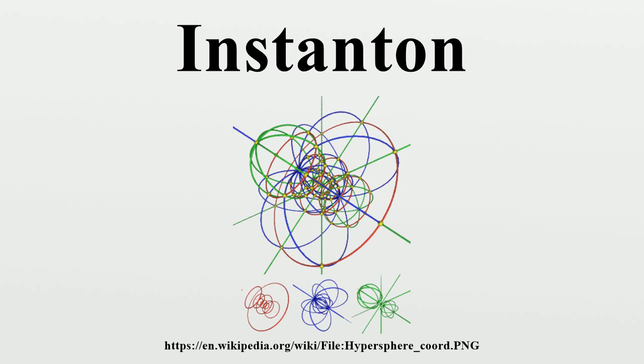As the third homotopy group has been found to be the set of integers, there are infinitely many topologically inequivalent vacua, denoted by their corresponding Pontryagin index.